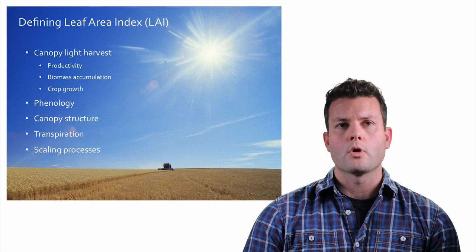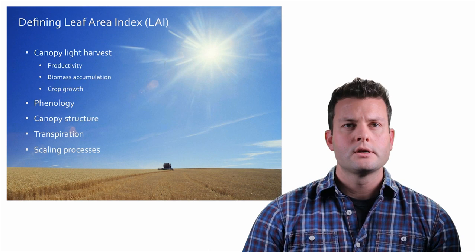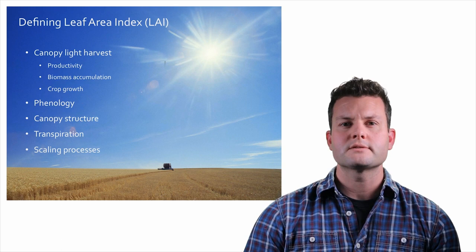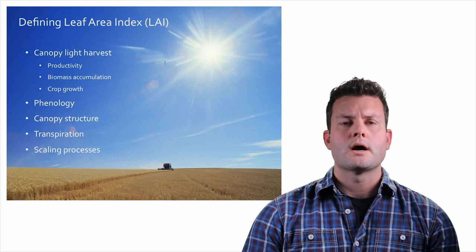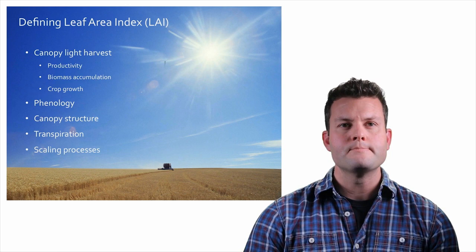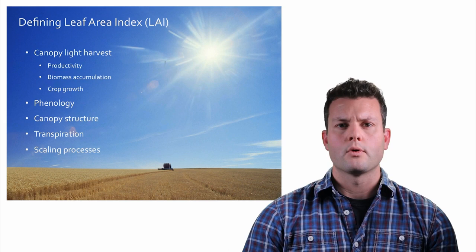Leaf area index can also be used as an indicator of phenology — describing the life cycle events of plants. In deciduous forests, every year leaves flush, grow, expand, mature, and finally senesce, and all of that can be described simply by tracking leaf area index through time. LAI is also commonly used as a measure of canopy structure or as a way to differentiate the structure of one canopy from another.